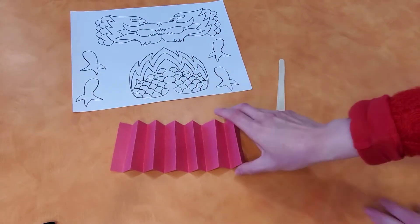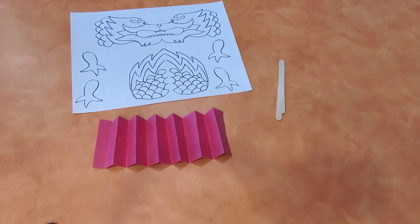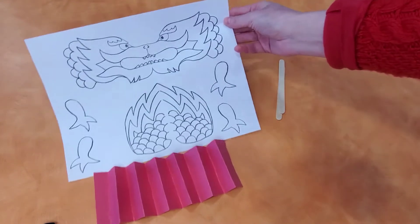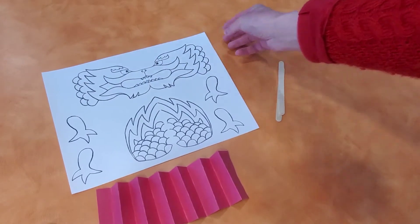So you've made the body of the dragon. And then next, you're going to want to color and cut out the dragon pieces.